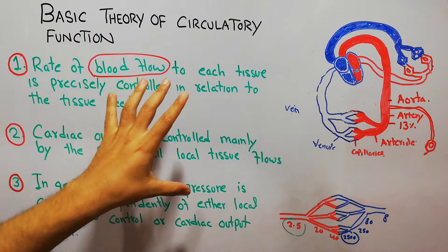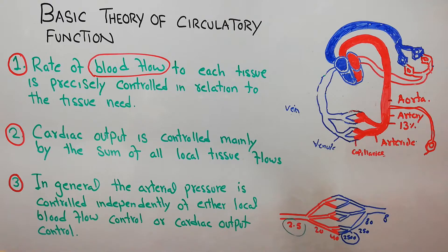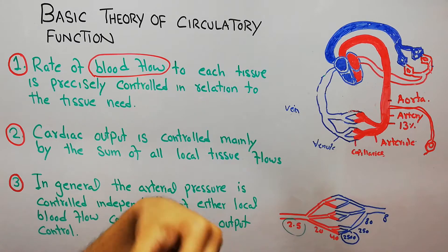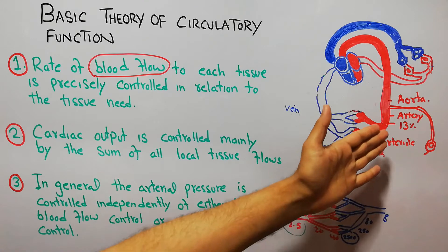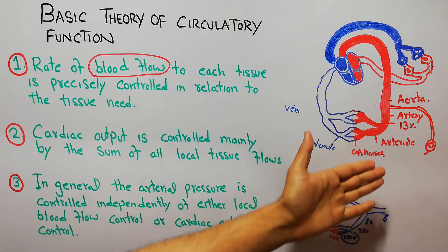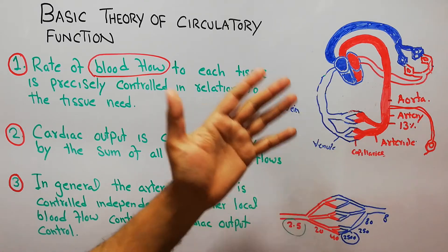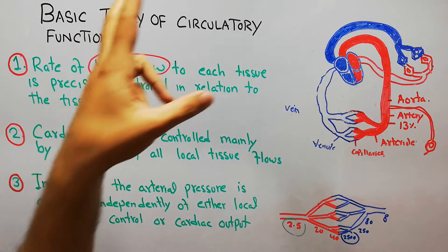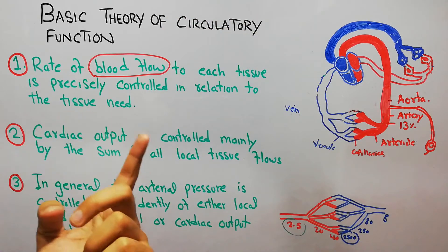We previously discussed that the circulatory system has different parts like aorta, arteries, arterioles, capillaries, venules, veins, and vena cava, and the circulatory system basically consists of two circuits.